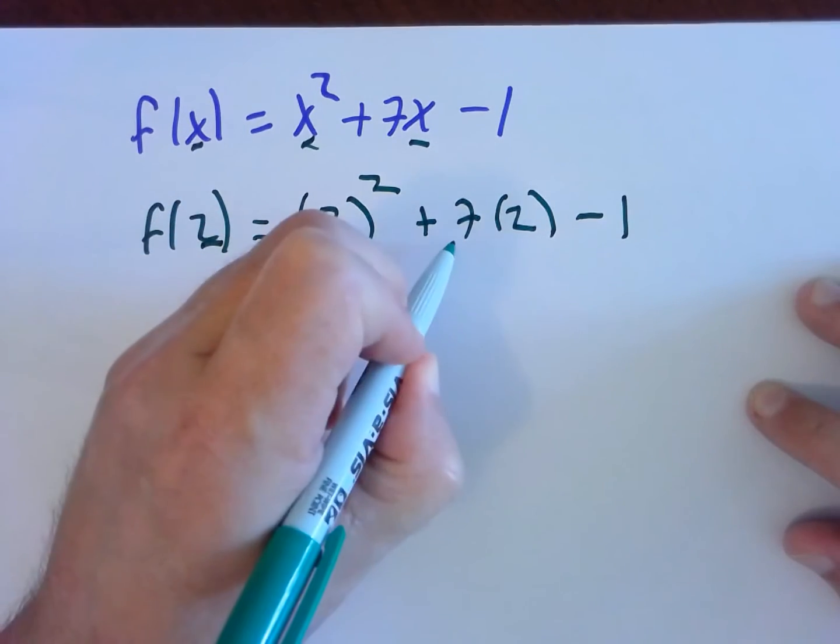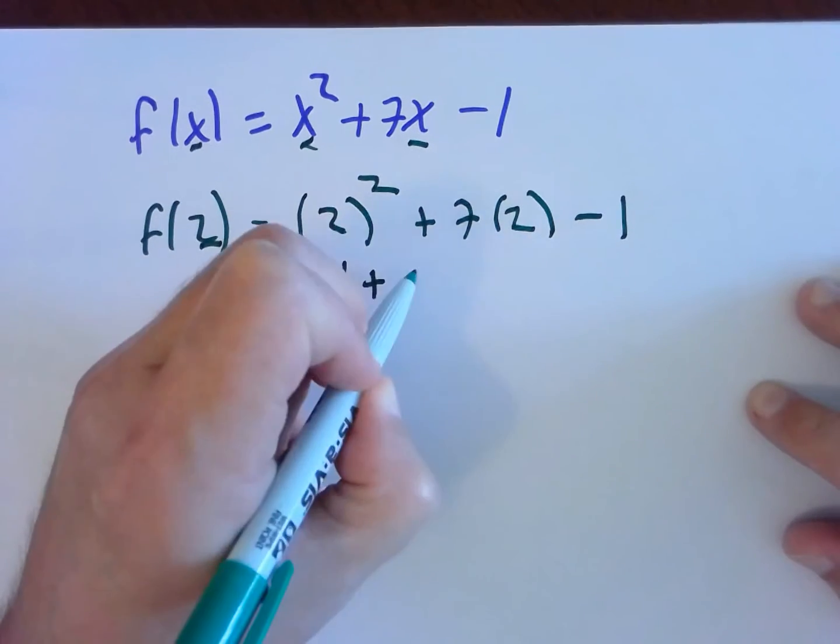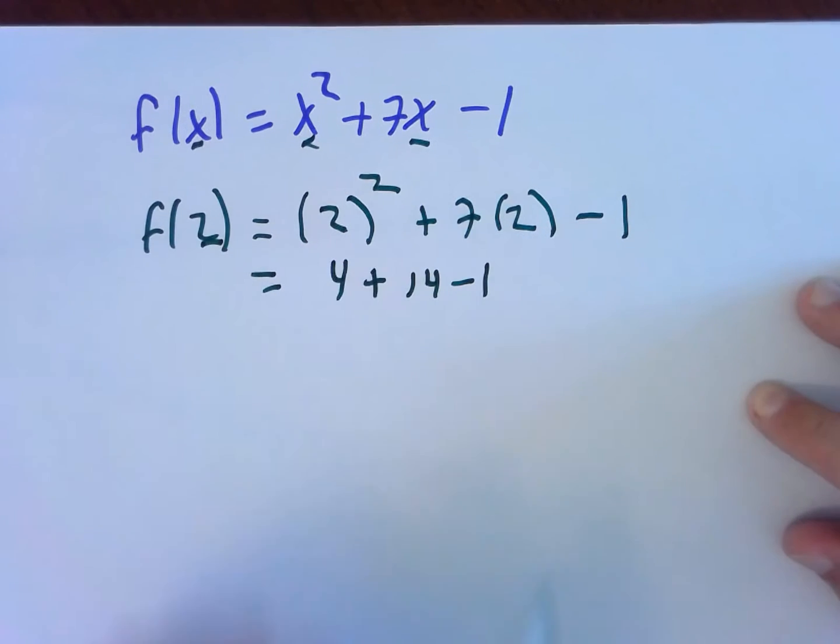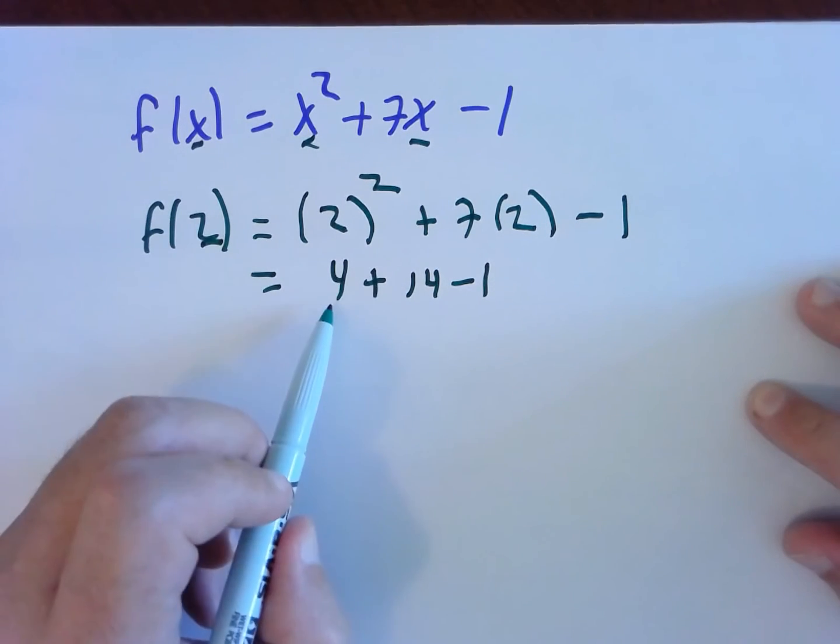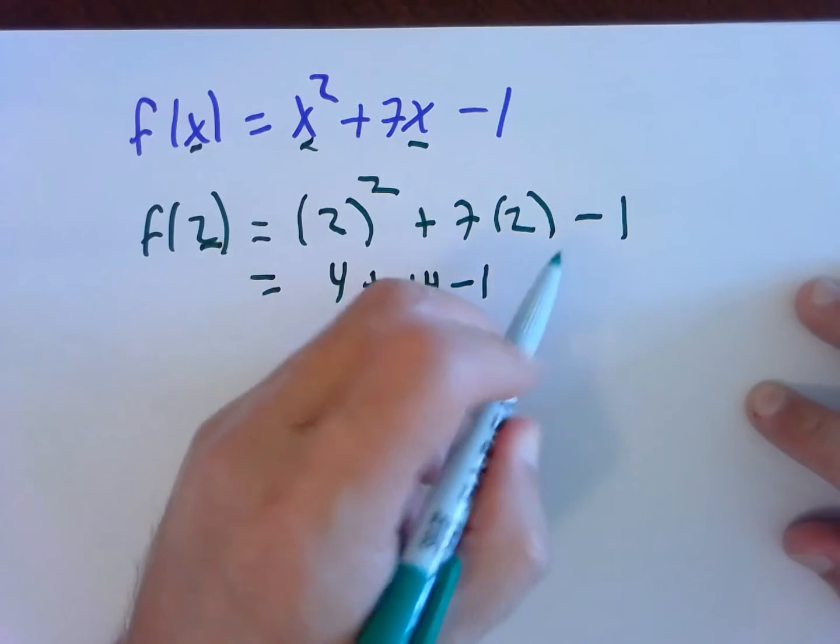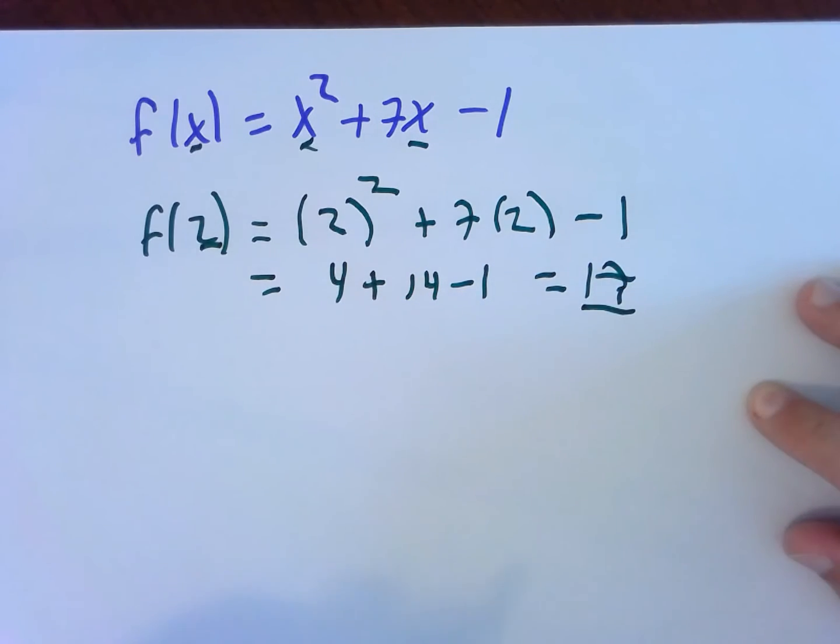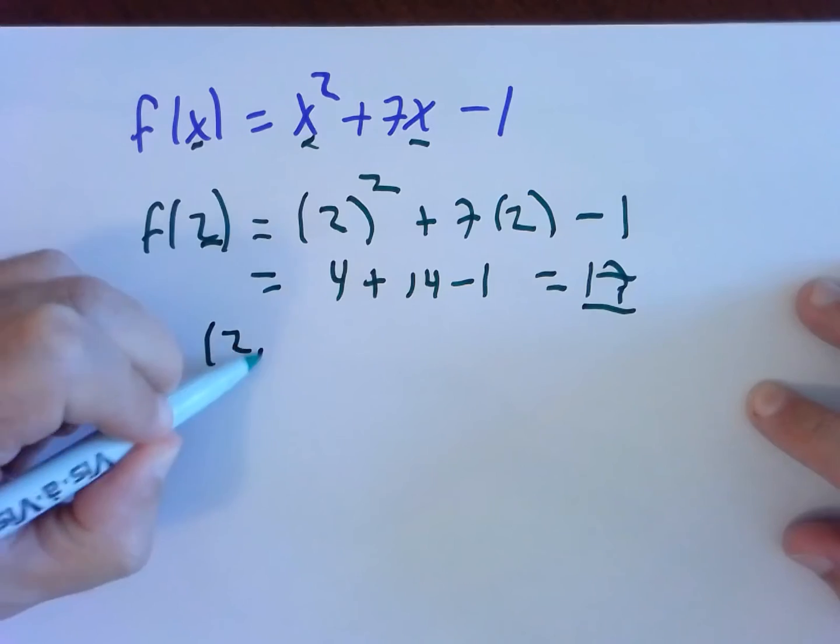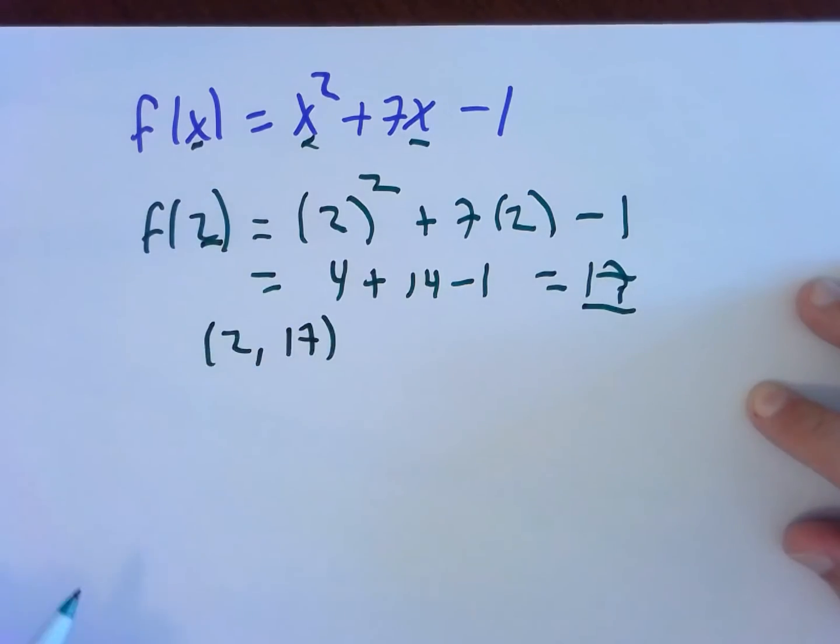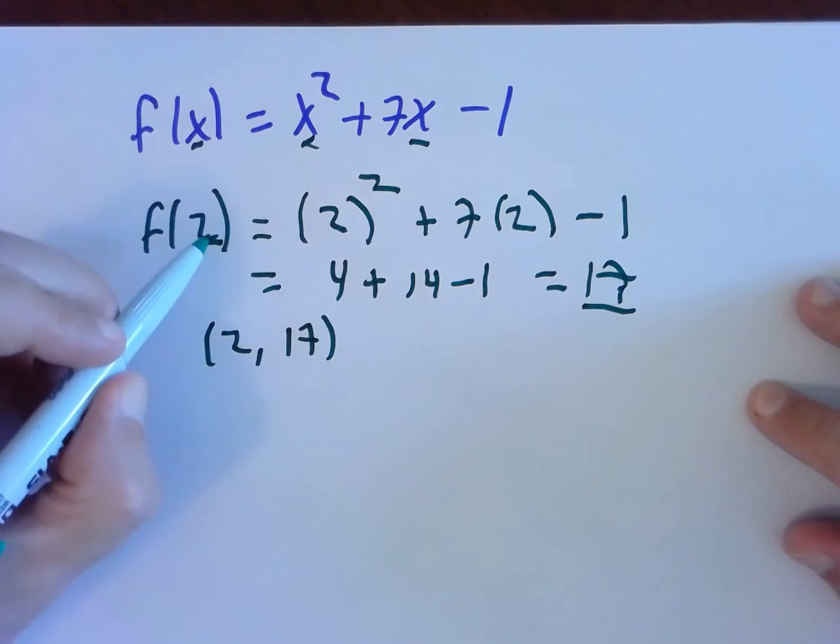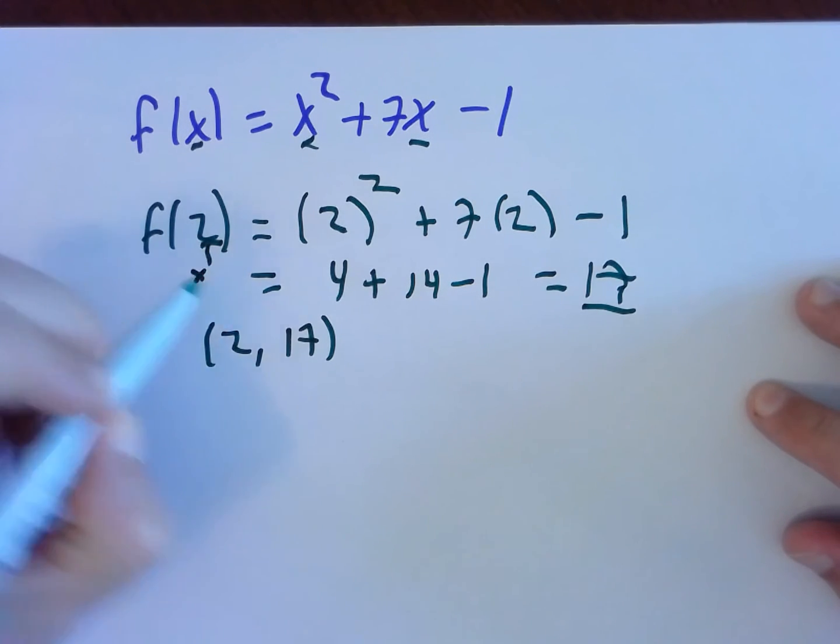2 squared is 4, plus 7 times 2 is 14, minus 1. So what do we get here? 18 minus 1, 17. So the point 2, 17 is a point on this graph. If we were to graph this function, when x equals 2, y will be 17. Remember, that's an x. That's a y.